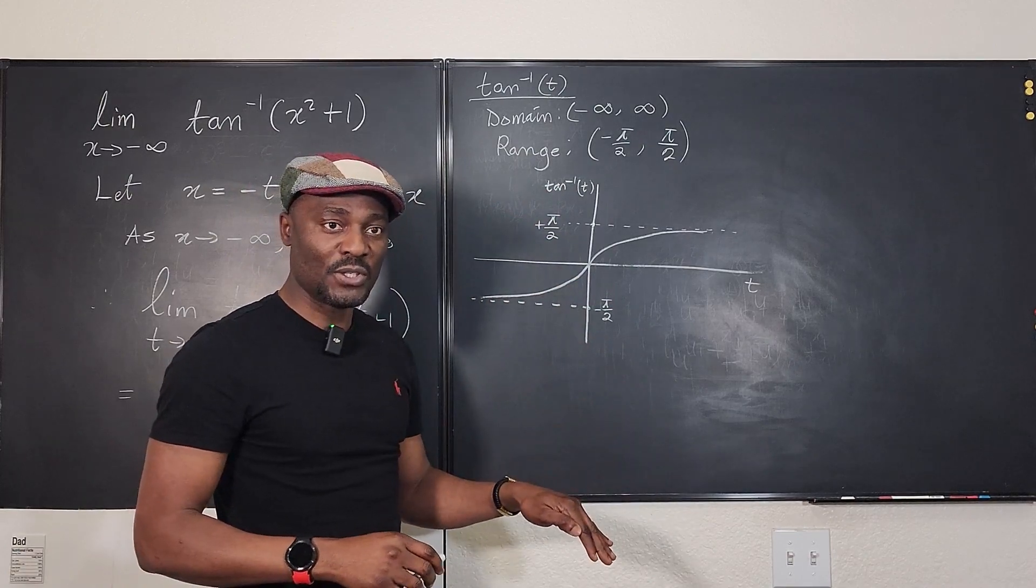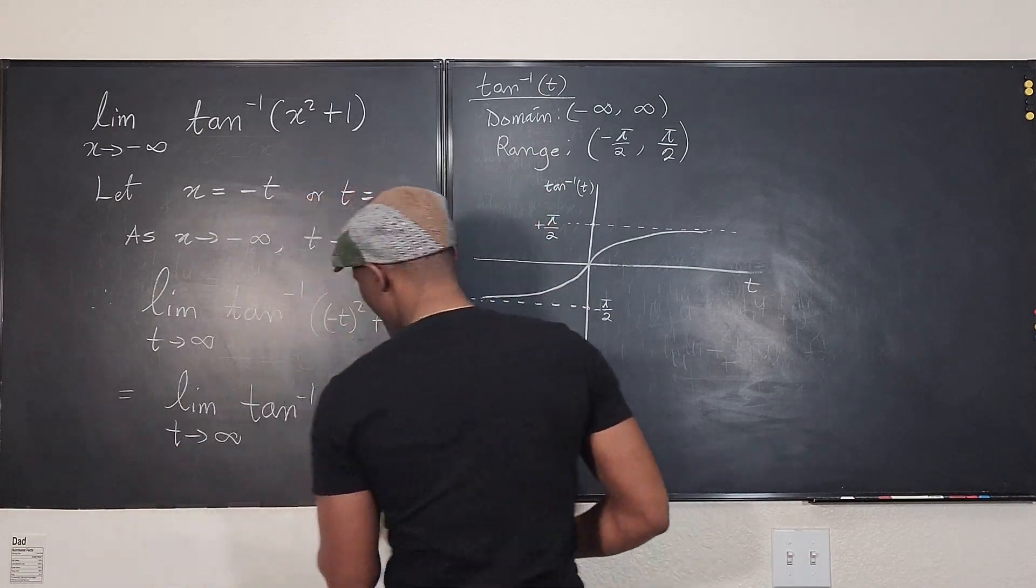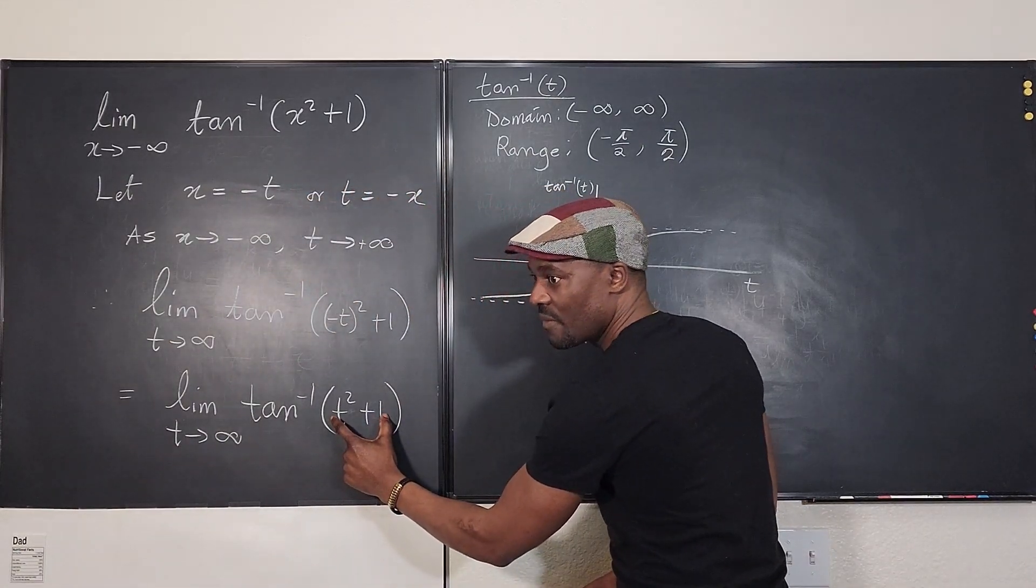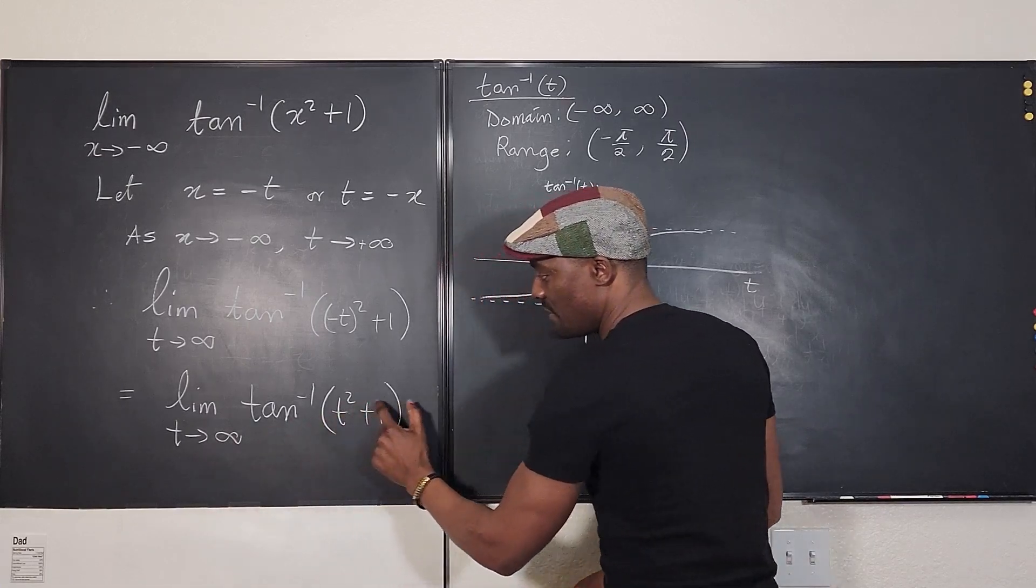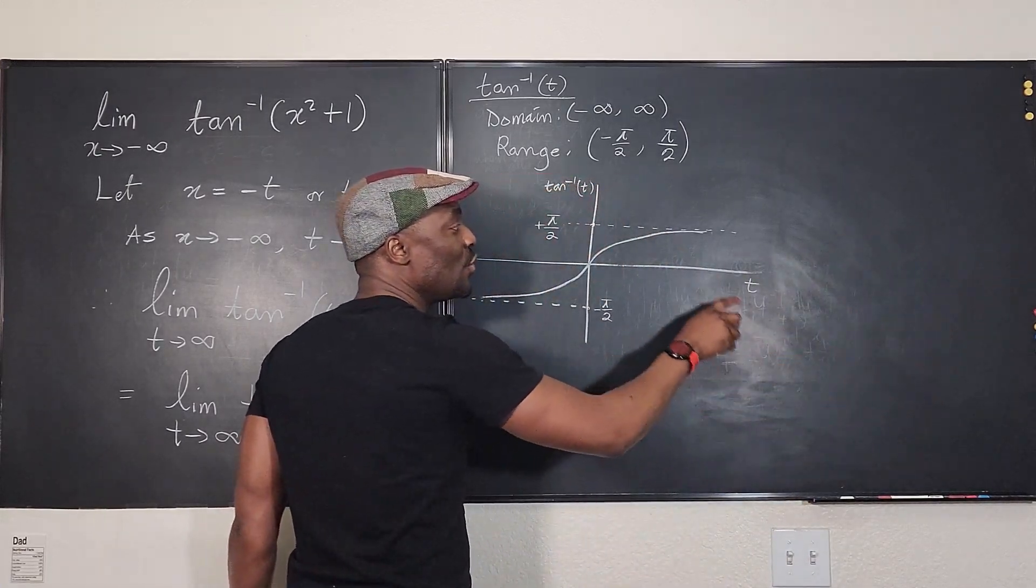That's this asymptote here. So no matter what you do to this graph, it will never go above π/2, it will never go below negative π/2. So whatever is happening here, no matter how big this becomes, the limit as t goes to infinity, which will be infinity, just keep going to the right.